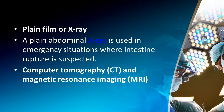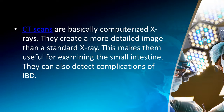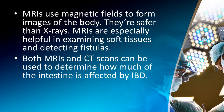A plain abdominal X-ray is used in emergency situations where intestinal rupture is suspected. CT scans and MRI are also used. CT scans are computerized X-rays that create more detailed images than standard X-rays, making them useful for examining the small intestine and detecting IBD complications. MRIs use magnetic fields to form images; they are safer than X-rays and especially helpful for examining soft tissues and detecting fistulas. Both MRI and CT scans can determine how much of the intestine is affected by IBD.